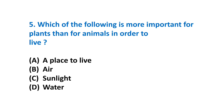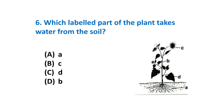Question 5: Which of the following is more important for plants than for animals in order to live? A) A place to live, B) Air, C) Sunlight, or D) Water. Question 6: Which part of the plant takes water from the soil? Look at the picture carefully and select your answer.